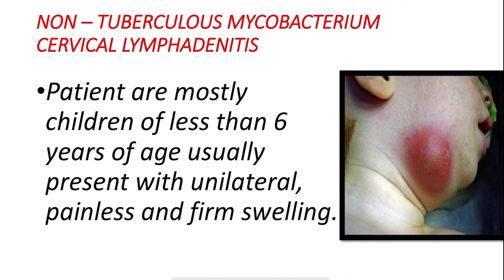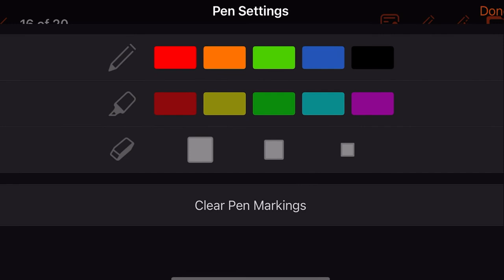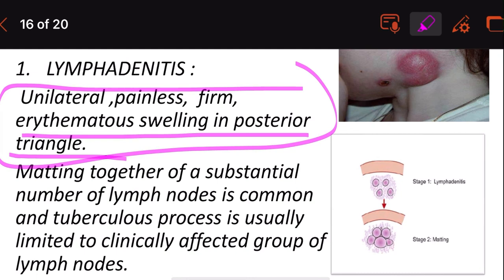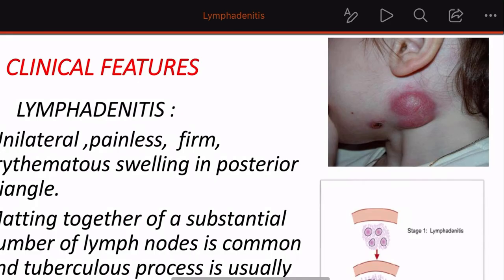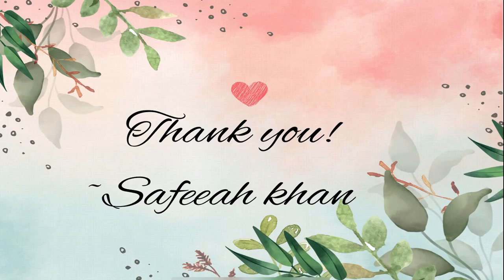The third type is non-tuberculous mycobacterium cervical lymphadenitis. The patients are mostly children of less than 6 years of age. They present with a unilateral, painless, and firm swelling. With this, we come to an end of the topic of lymphadenitis.